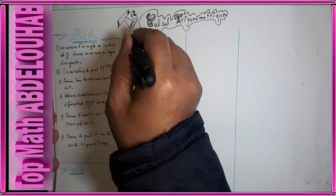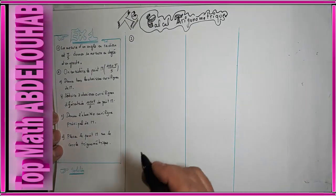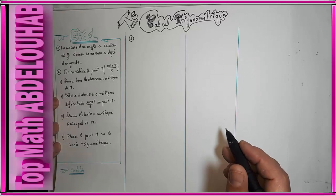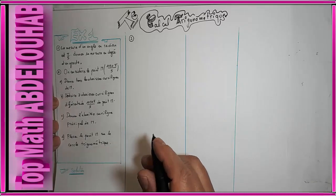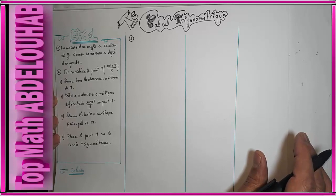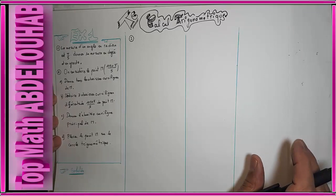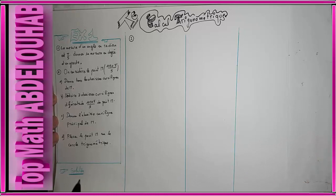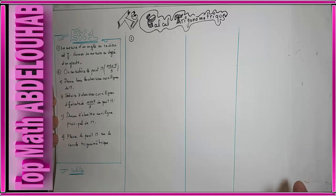Pour la première question, il s'agit des techniques de conversion : comment passer d'une unité de mesure à une autre pour un angle. Rappel : les unités de mesure d'un angle sont le degré, le radian et le grade. En collège on adopte le degré, et au lycée et après le bac on adopte le radian. Il faut bien connaître les techniques pour passer d'une unité à une autre.